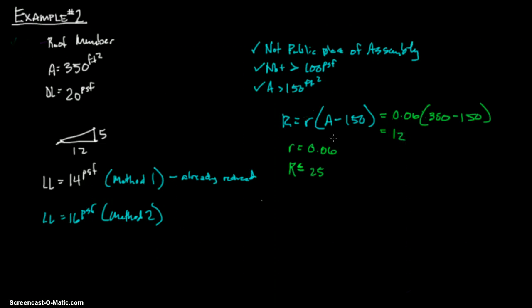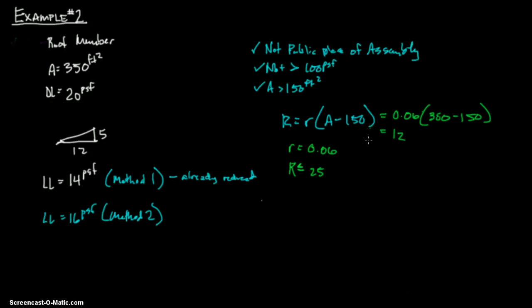So 200 times 0.06 equals 12. So we have 12. Our rate of reduction is 12. R equals 12. It is less than 25, so we're good. This will control. We want to go back to what controls over there.